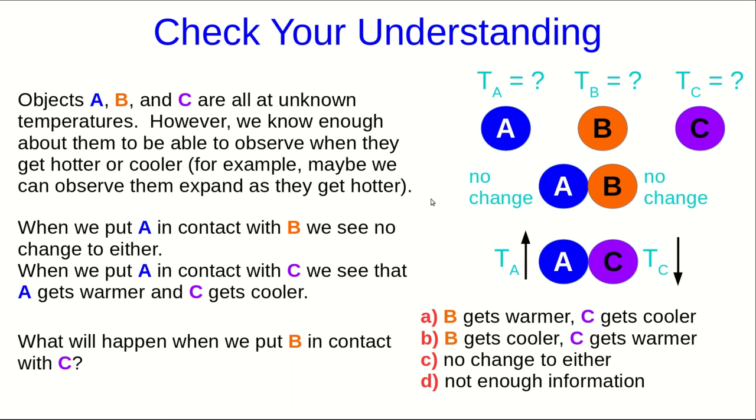Let's check your understanding of this so far. Let's say we have three objects, A, B, and C, and we don't know their temperatures, but we do know how to tell when they're getting warmer or cooler. So maybe the easiest thing to think of is that these are just mercury thermometers, except they haven't been calibrated, so they have no scales on them. So we can certainly tell when they warm up because the column of mercury gets taller. When we put A in contact with B, we see no change to either one. And when we put A in contact with C, we can see that A gets warmer and C gets cooler. So what's going to happen when we put B in contact with C?